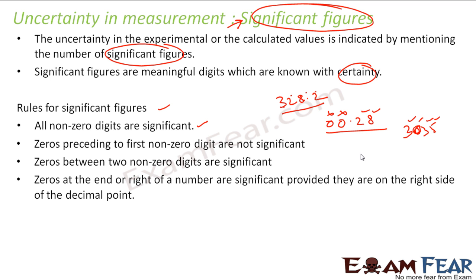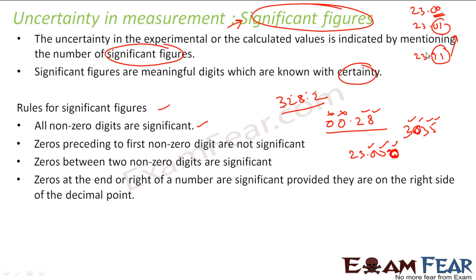For example, 23.002 or 23.000 — these trailing zeros are significant. When I say 23.00, that means I can also talk about 23.01 or 23.91, meaning these decimal values are known with certainty. If I say 23.0, I am only interested in values like 23.1 or 23.2 — this reflects the precision of the instrument. So if there is a decimal point and there are zeros after it, they are significant.